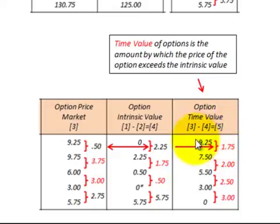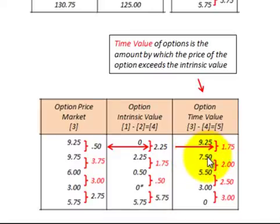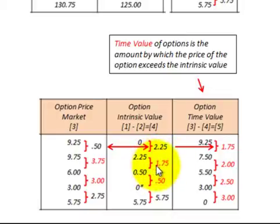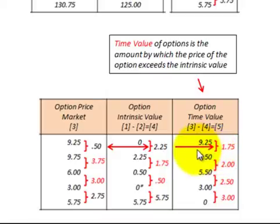If we started with a time value of $9.25 for the option and subtract the $1.75 change, our new time value would be $7.50. We continue subtracting the intrinsic value change from the market value change each period. In the next period, we had a negative $3.75 market value change, and we subtract out the negative $1.75 intrinsic value change, giving a change of negative $2.00. Subtracting negative $2.00 from the beginning time value of $7.50 gives us $5.50.